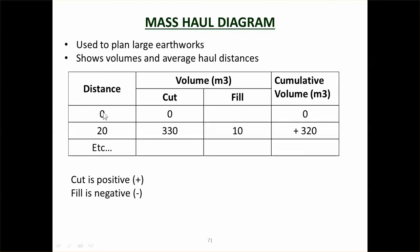So the mass haul diagram: you would have learnt this in soil and structural drawing. You've got the distance there, you've got your cut volume and fill volume. And then the mass haul diagram is really just the distance versus the cumulative volume. So in this case here we've got 330 cubic meters of cut in this section from 0 to 20, there's 10 cubic meters of fill. Therefore the cumulative volume is 320 and so on.